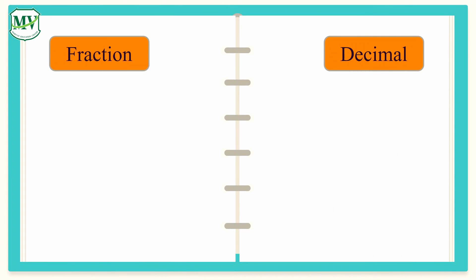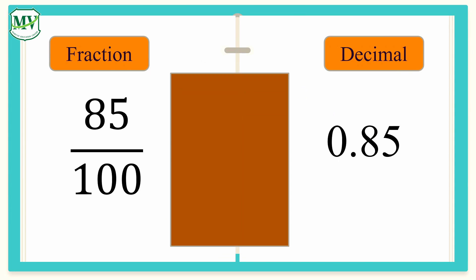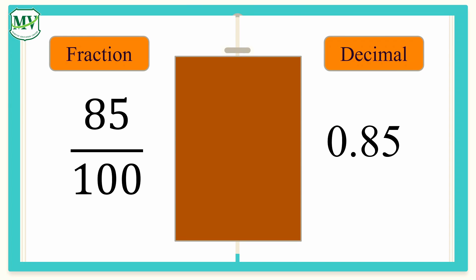So, fraction and decimal can both express the same value of a number in different ways. For example, 85 over 100. We can express it as 0.85 in decimal. How did we do that? Simple. We just divide 85 to 100, like this.